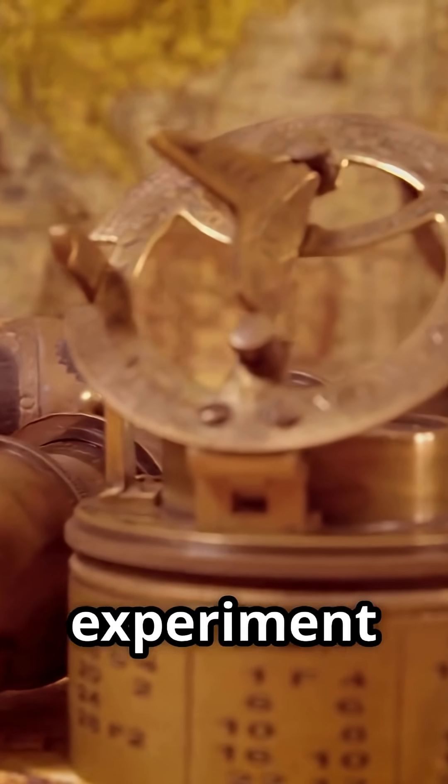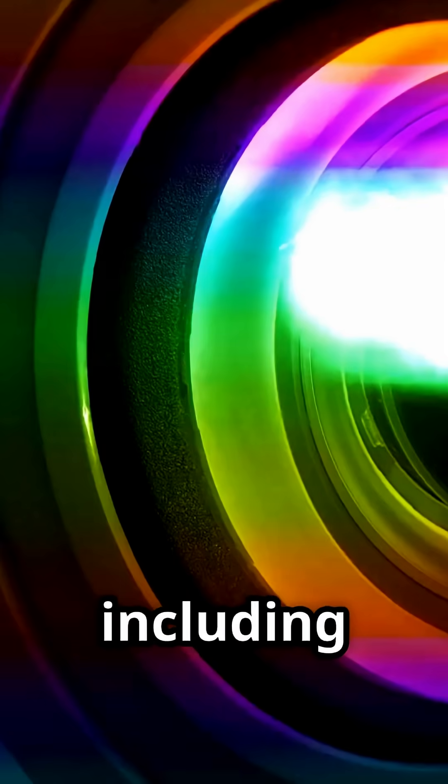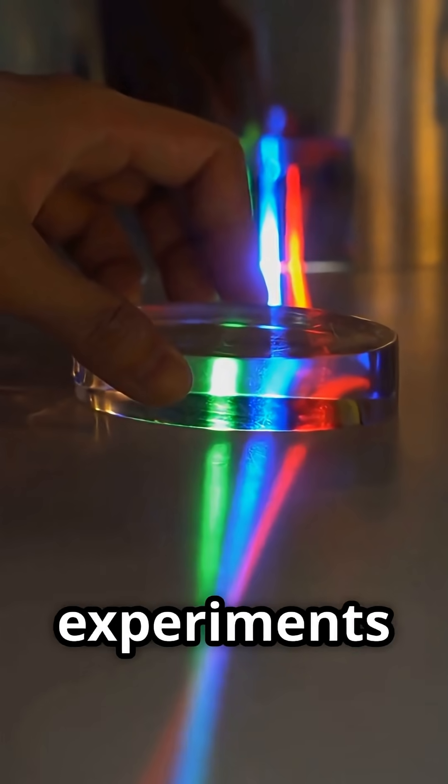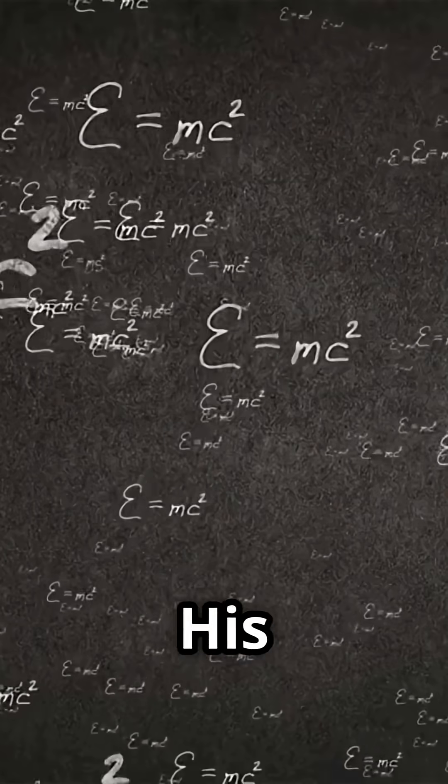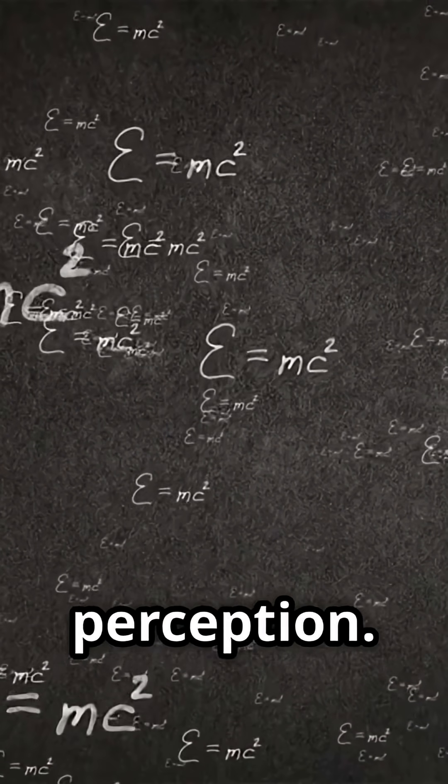This eye experiment contributed to his groundbreaking work in optics, including his discovery that white light is composed of a spectrum of colours, which he demonstrated through prism experiments shortly after. His work laid the foundation for our modern understanding of light and visual perception.